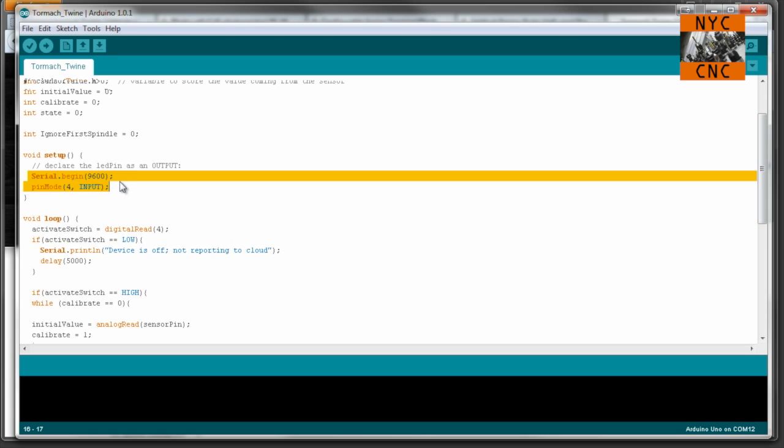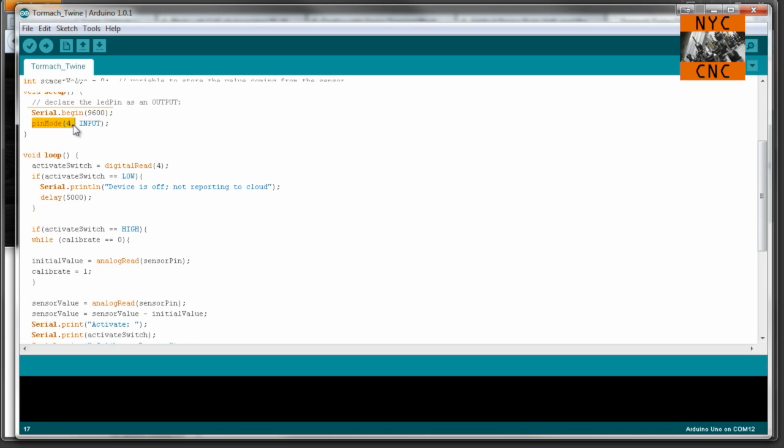In the setup, I did a lot of serial debugging, so that's why I've got serial.begin. Then we define pin 4 as an input pin—that is the black toggle switch I mentioned earlier. In the loop, the first thing we do is read that digital pin 4 and figure out whether we want to talk to the Twine or not. If that switch is up, it's low and we say 'device off, not reporting to the cloud,' and we wait five seconds.